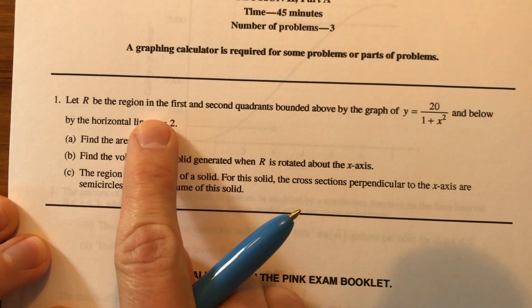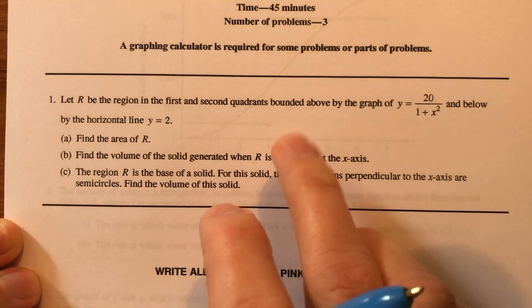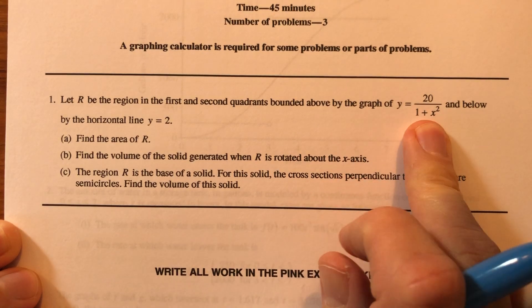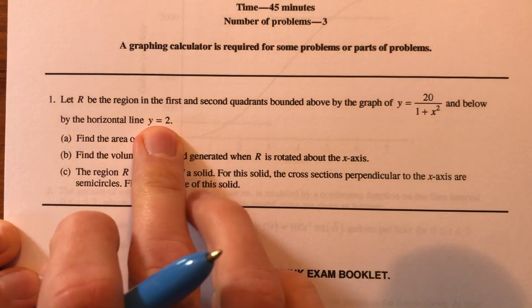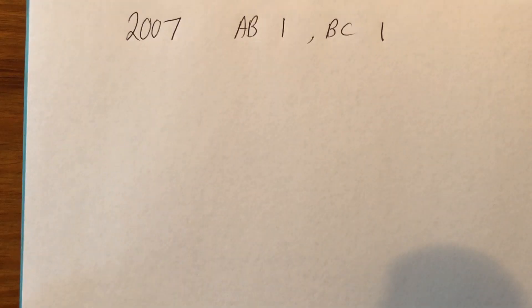Let R be the region in the first and second quadrant, so we're in the top two portions, bounded above by the graph of that and below by the horizontal line y equals 2. So before we go any further, let's just go ahead and sketch that, see what it looks like.